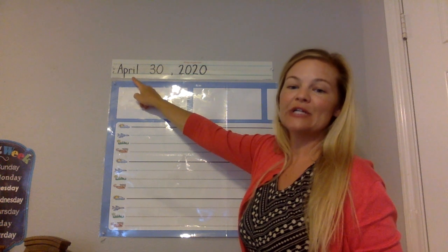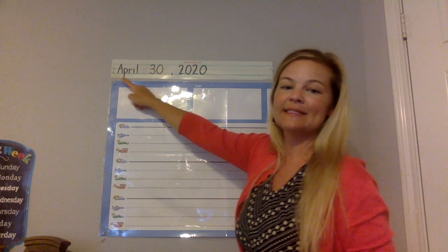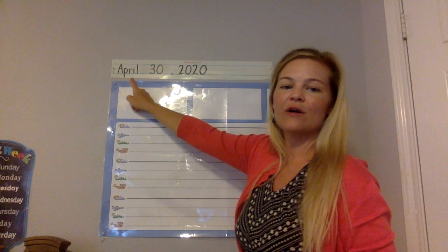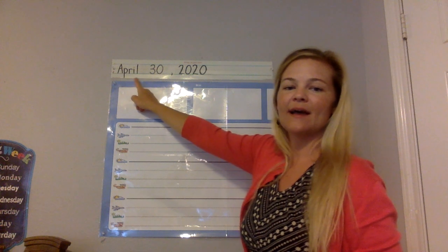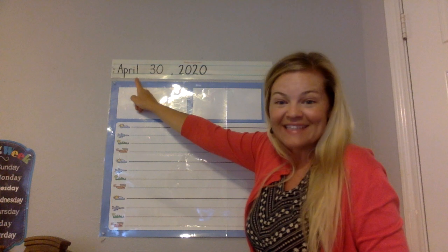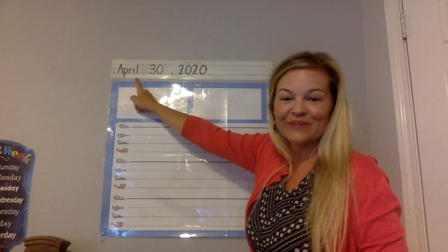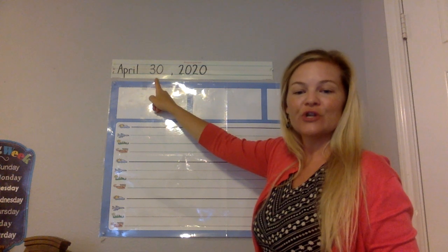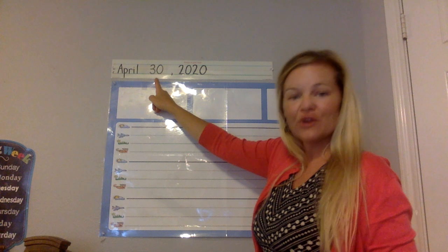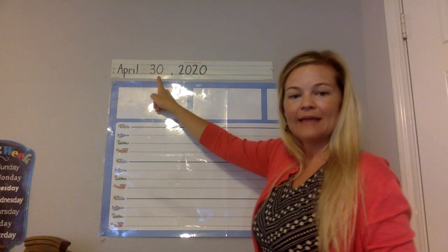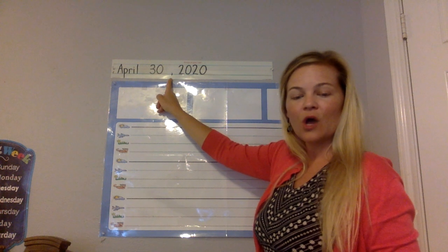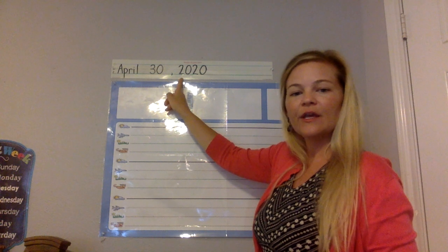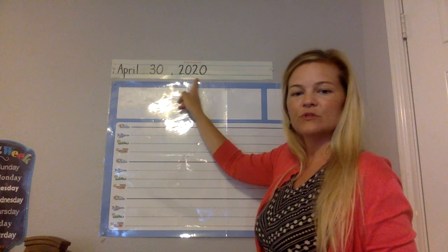At the top of the page, write the date. Capital A, lowercase p, lowercase r, lowercase i, lowercase l. That's the last time we're going to write the date as April this year. And then a space, 30 — a 3 and a 0. A little comma on the graph line, and then the year, 2020.